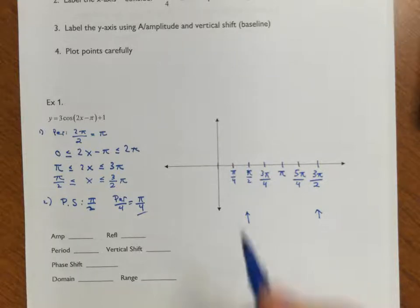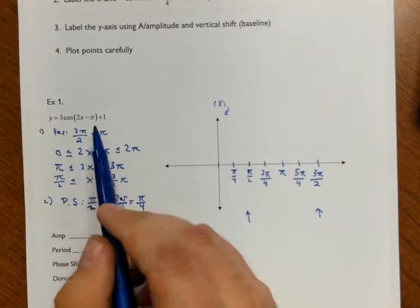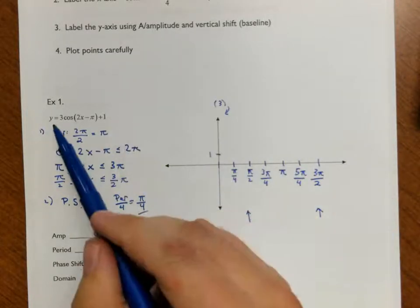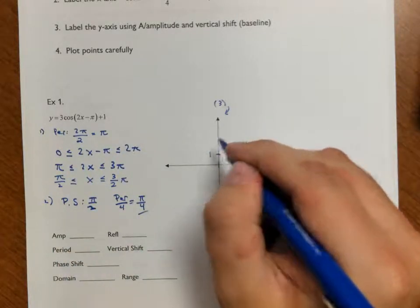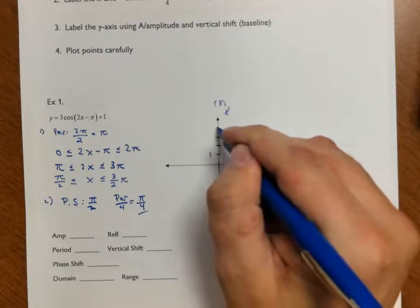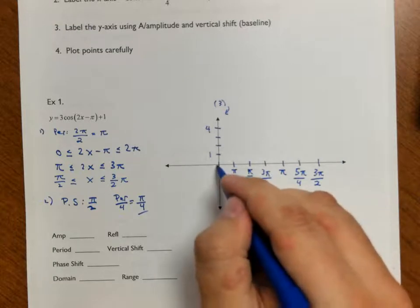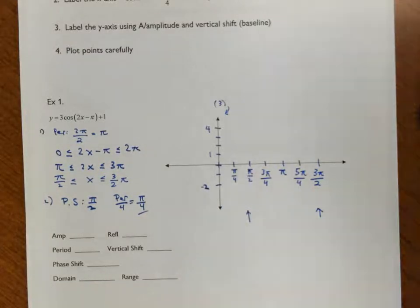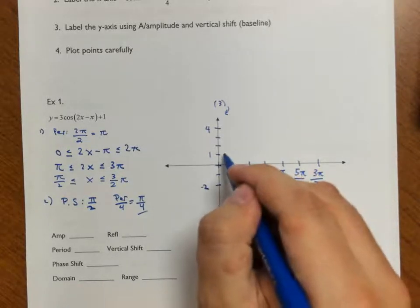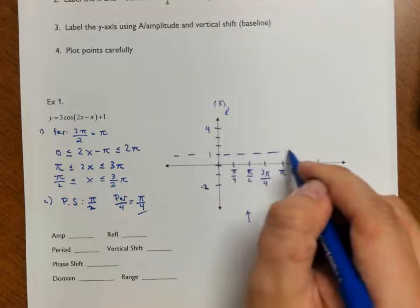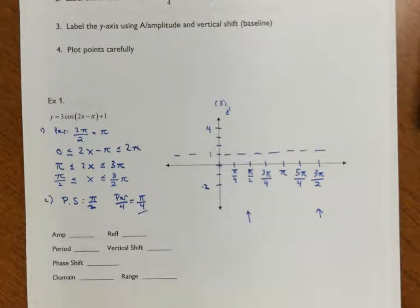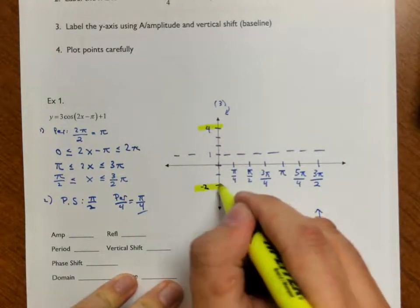My third step is to take care of the y-axis. I can see I have a vertical shift of up 1 unit, so I mark that here — there is 1. I can also see a stretch of 3, which gives me an amplitude of 3. So I go up to 4 at the top and down to negative 2 at the bottom. My baseline is at 1, so I'll put a dashed line right there.